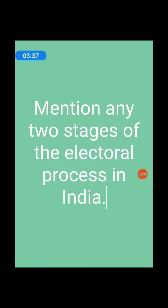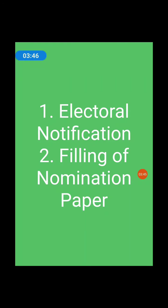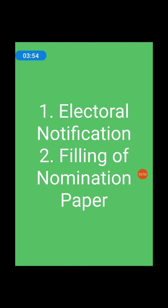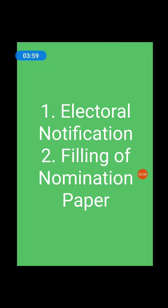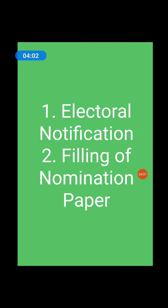Mention any two stages of the electoral process in India. First one is electoral notification — the electoral process is formally set into motion by a presidential announcement calling upon electors to elect their representatives to the Lok Sabha. Second is filling of nomination paper — the Election Commission fixes the last date for filing the nomination for elections.